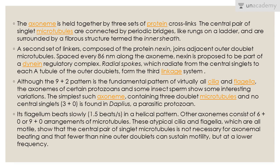The axoneme is held together by three sets of protein cross-links. First, the central pair of singlet microtubules are connected by periodic bridges like rungs on a ladder, surrounded by a fibrous structure named the inner sheath. Second, the protein nexin joins adjacent outer doublet microtubules, spaced every 86 nanometers along the axoneme; nexin is proposed to be part of a dynein regulatory complex. Third, radial spokes radiate from the central singlets to the A tubule of each outer doublet, forming the third linkage system.